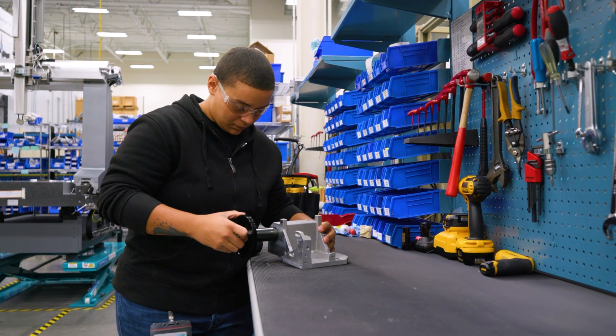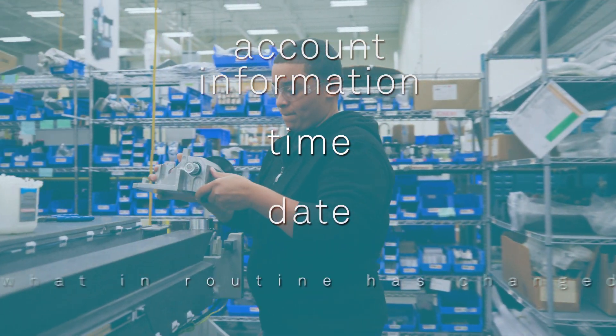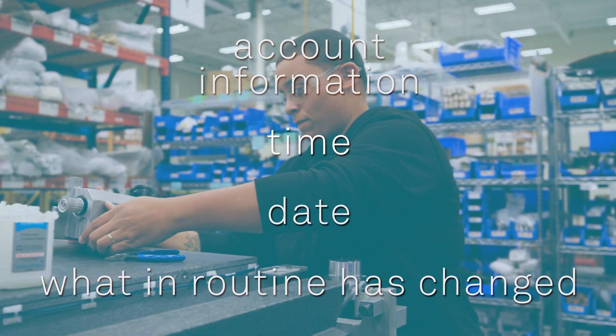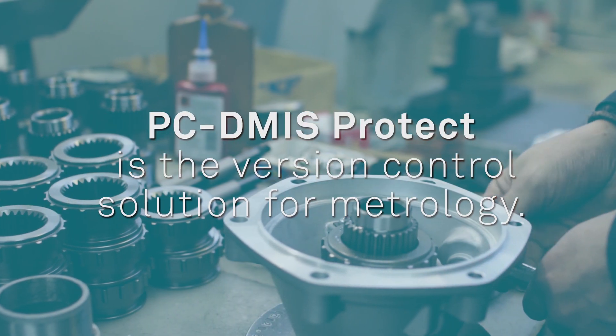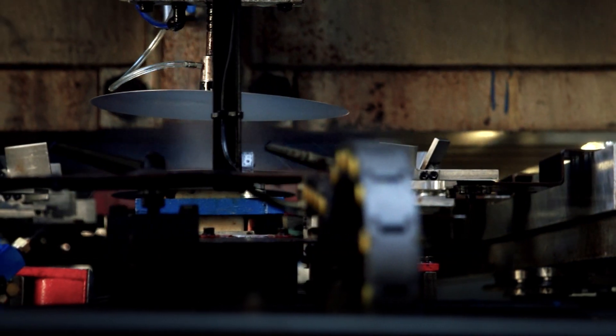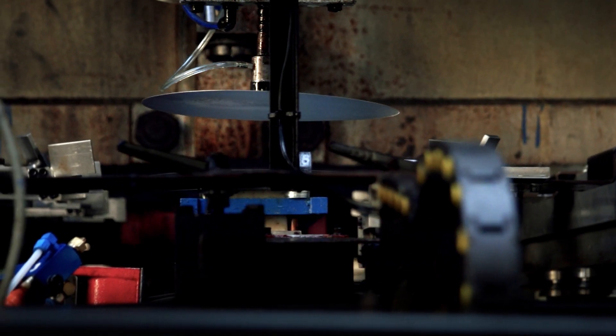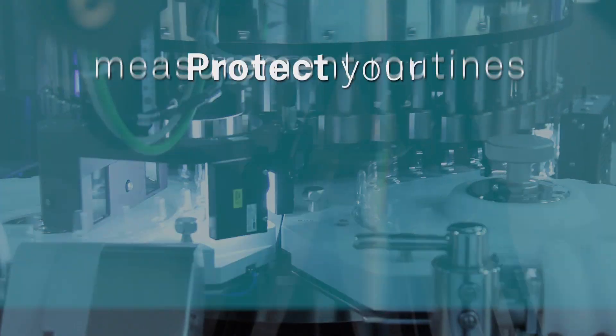PC-DMIS Protect records all the details, including account information, time, date, and what in the routine is changed. No matter the industry or process, PC-DMIS Protect is the version control solution for metrology. Protect also helps you gain industry accreditations such as FDA or ISO when used as part of a carefully designed quality process.